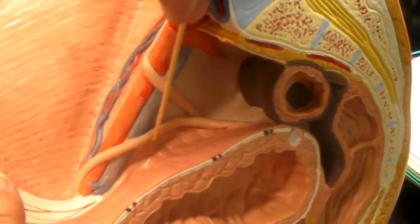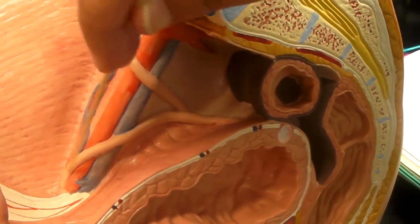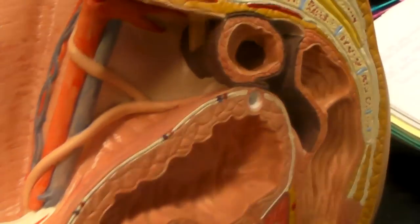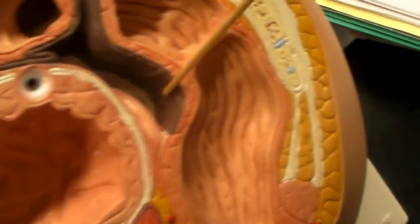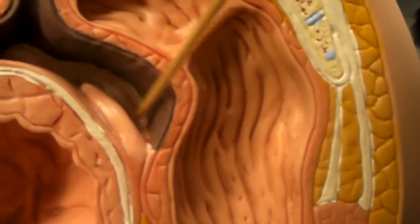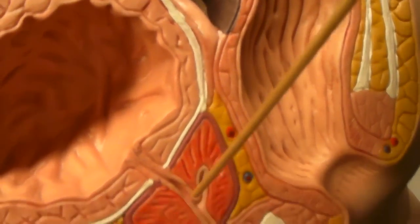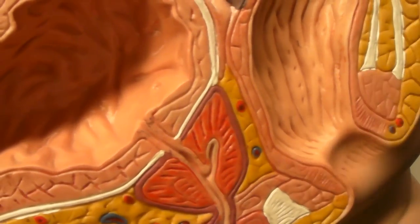This right here is not to be confused, because this is the ductus deferens. It goes around into the seminal vesicle right behind here. It comes in with the ductus deferens behind it, which cannot be seen on this model, and joins in right here into the urethra.